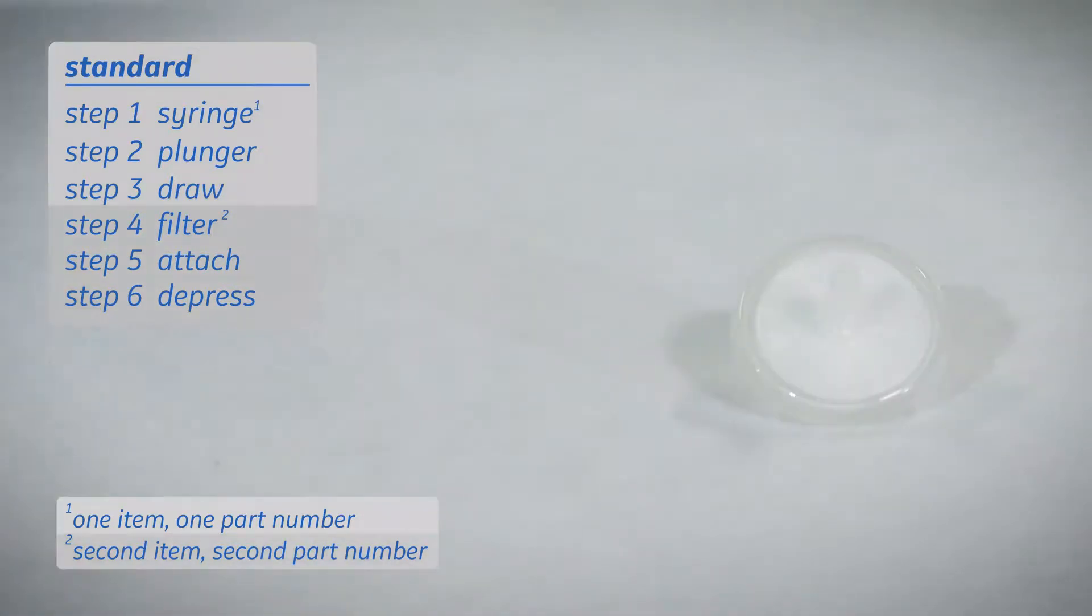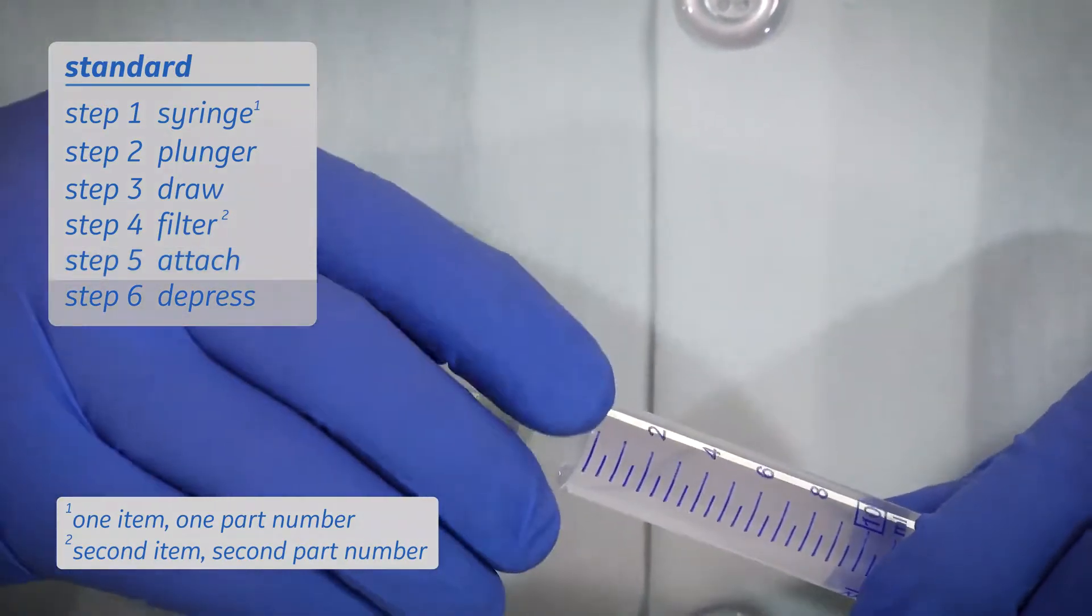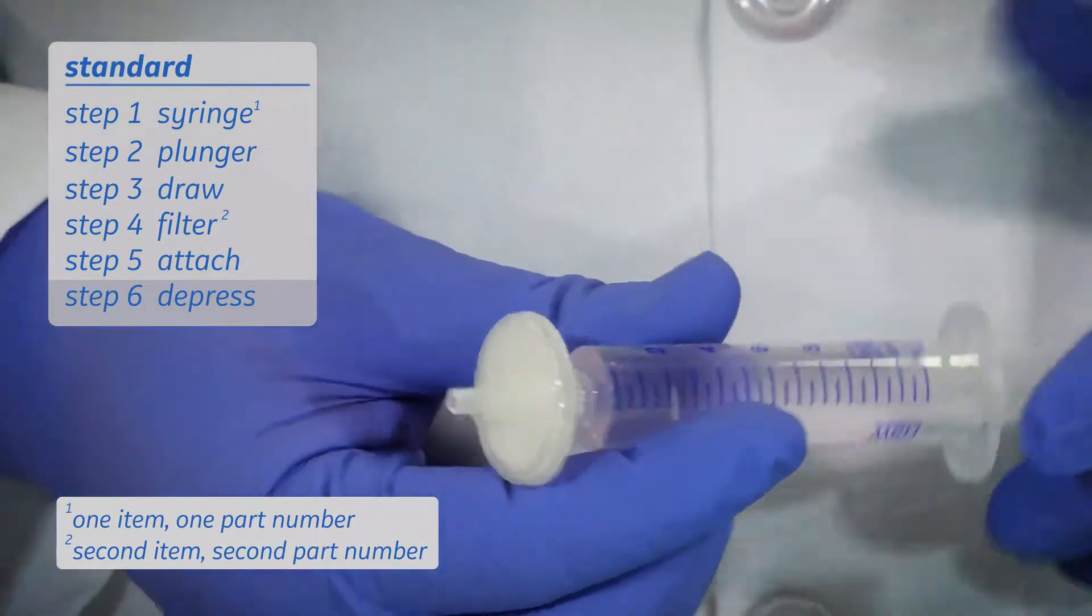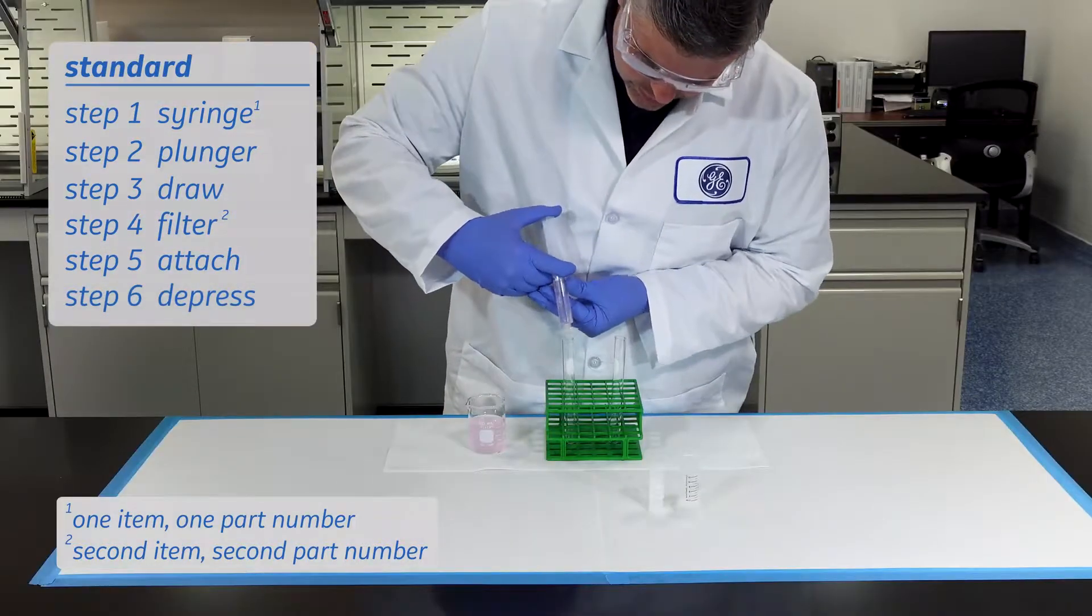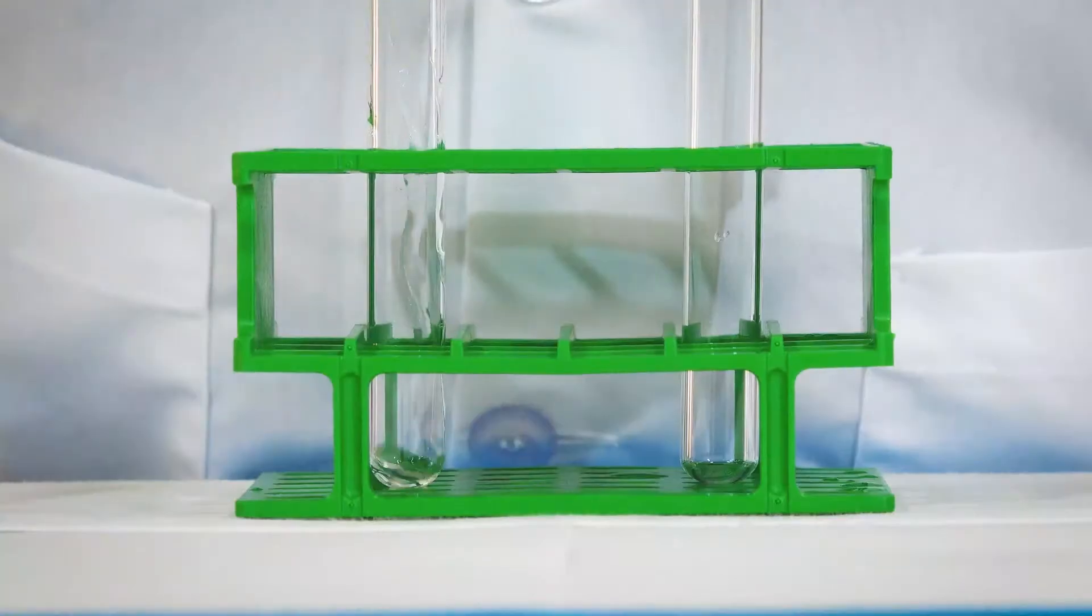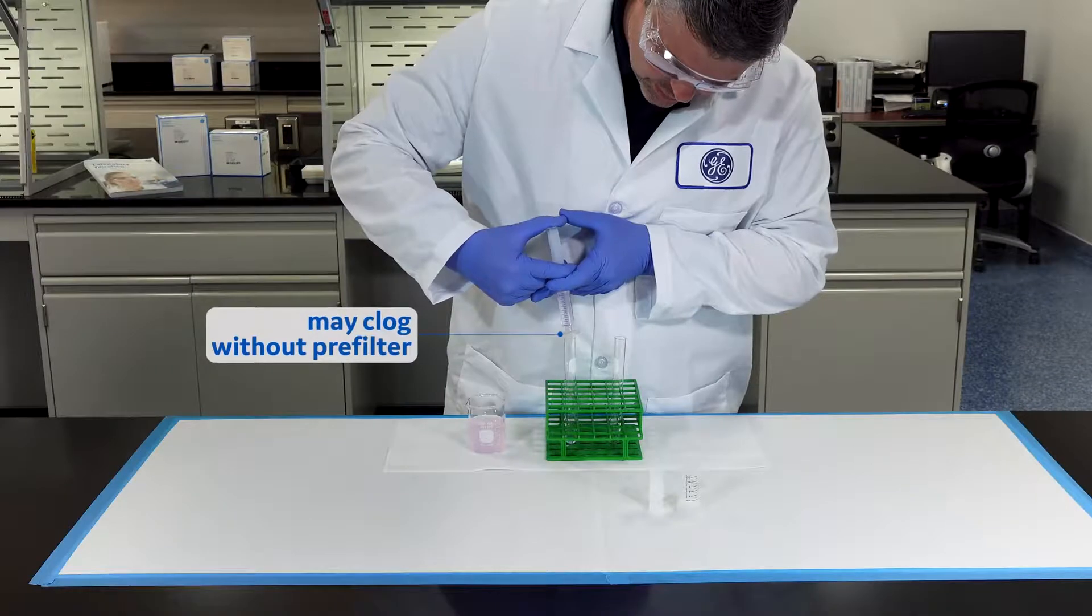Now retrieve the syringe filter and place it onto the syringe by using the slip luer fitting or luer lock on the end of the syringe. Now depress the plunger, filtering your sample. Without a pre-filter, the standard syringe filter may clog as it does here.